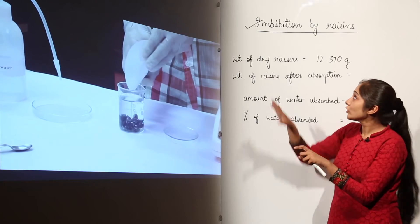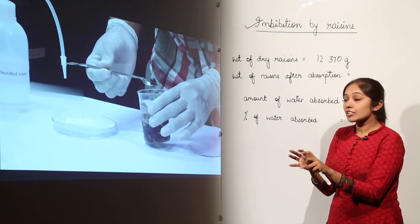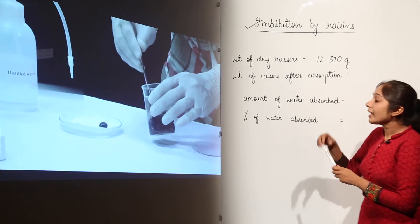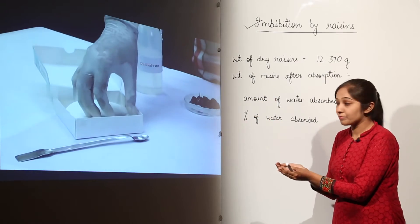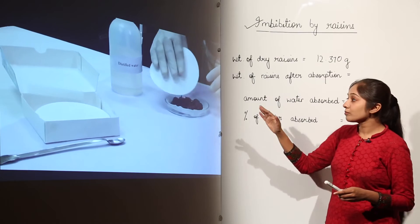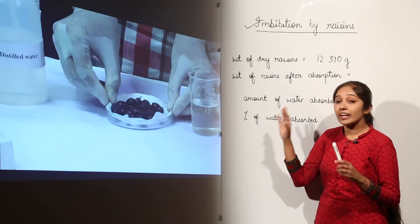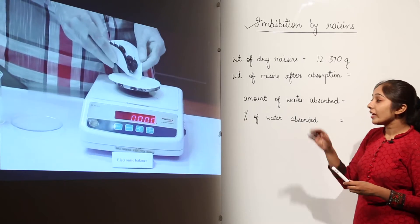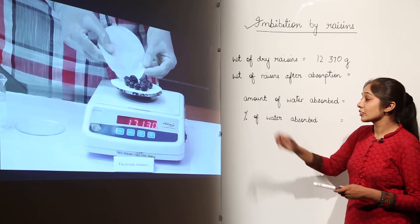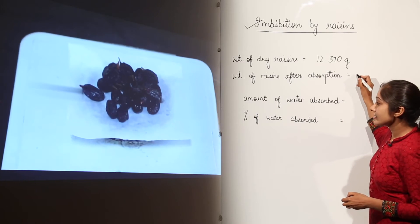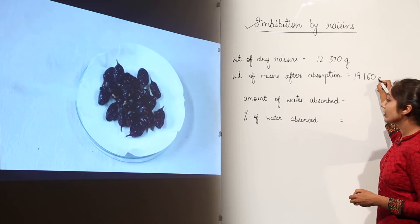The raisins will now show the process of imbibition — they absorb water because they are hydrophilic and contain substances that absorb water. After some time, place the raisins on a petri plate containing blotting paper and remove excess water using the blotting paper. Then weigh the raisins again on the weighing balance. The weight after absorption comes out to be 19.160 grams.